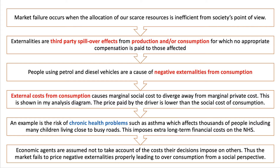Thus the price paid by the driver — the internal costs paid by the driver — is lower than the social cost of consumption. Don't forget: social cost equals private cost plus external cost. An example would be the risk of chronic health problems such as asthma, which affects tens of thousands of people living in urban areas, and in particular many children living close to busy roads — well-documented health problems which impose long-term extra costs on the National Health Service.